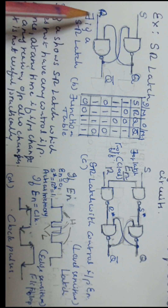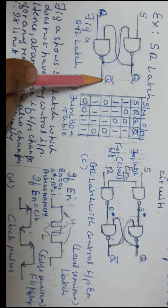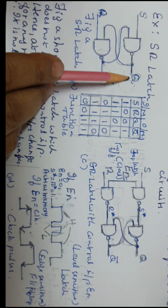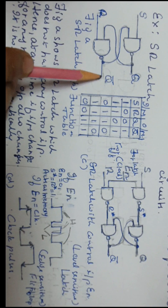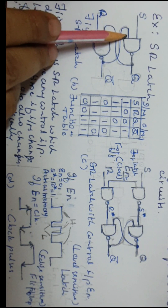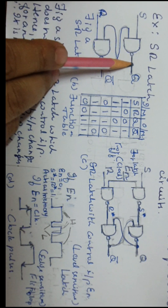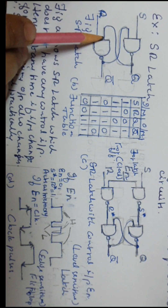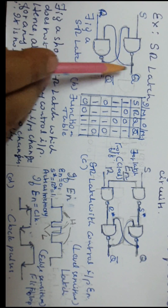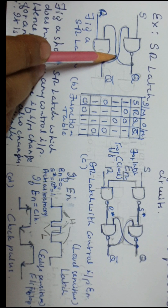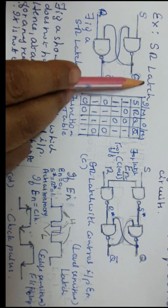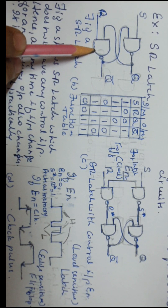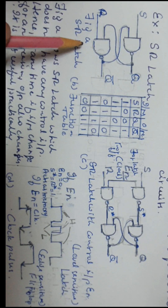This is the logic diagram of the SR latch. It has two NAND gates — a NAND-gate-based SR latch. S and R are the two inputs; Q and Q-bar are the outputs. A flip-flop always has two outputs: one is the normal output Q, and the other is its complement, Q-bar. Q-bar is connected as one input to one NAND gate, and Q is connected to the other NAND gate. A dot on the line indicates a connection; no dot means no connection. This is the basic circuit — the latch is the basic circuit, and from the SR latch, the SR flip-flop is built.